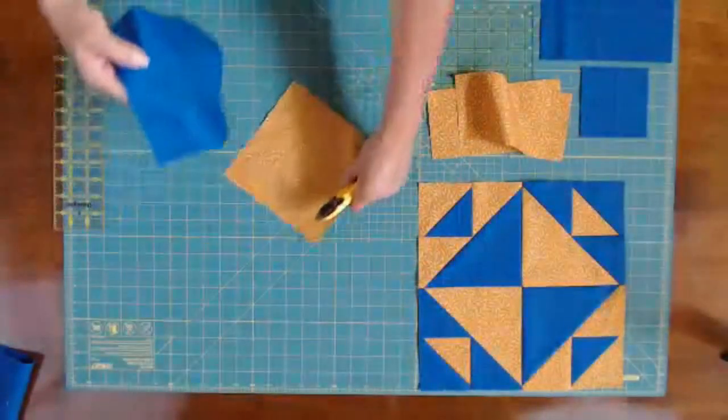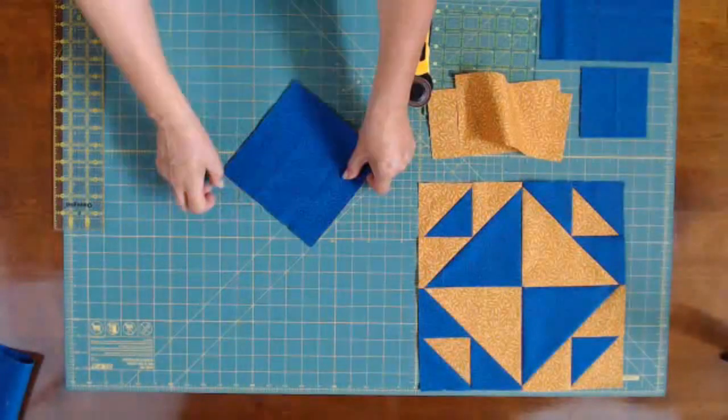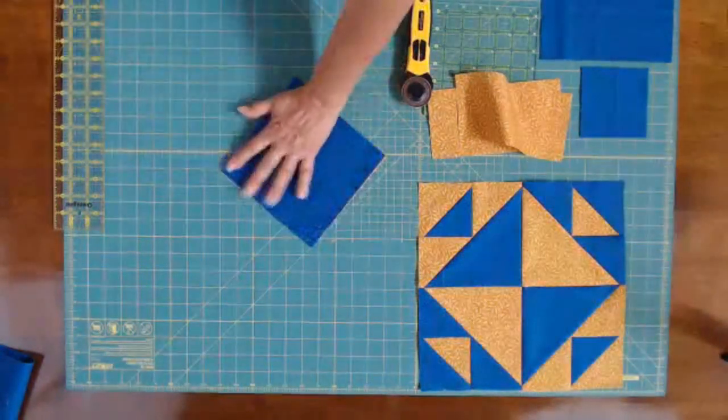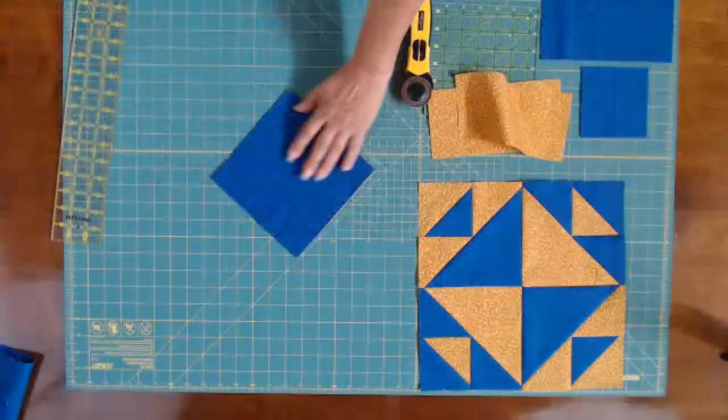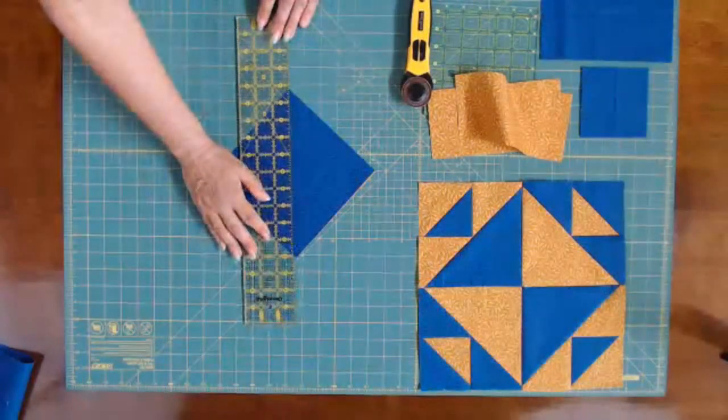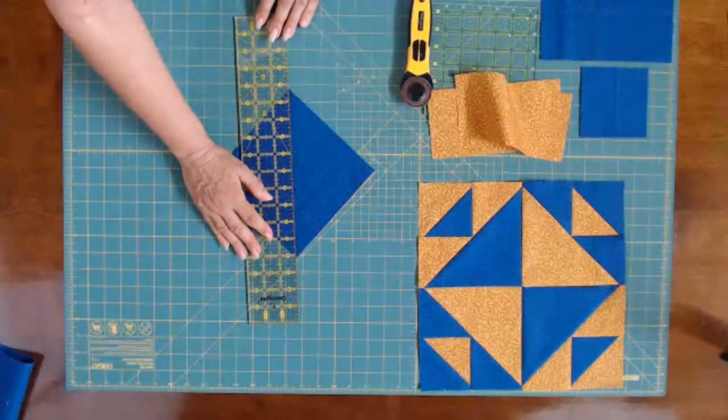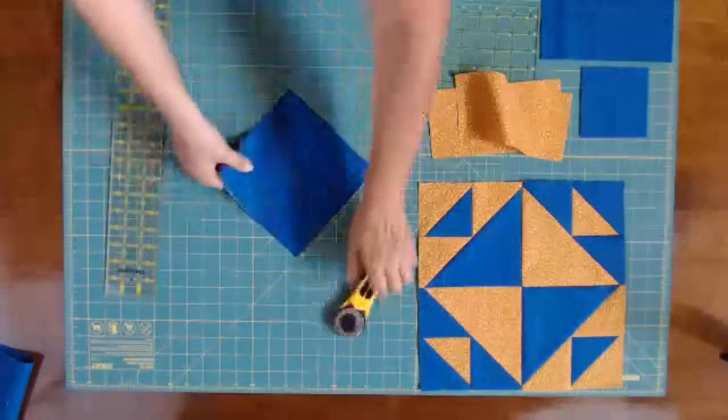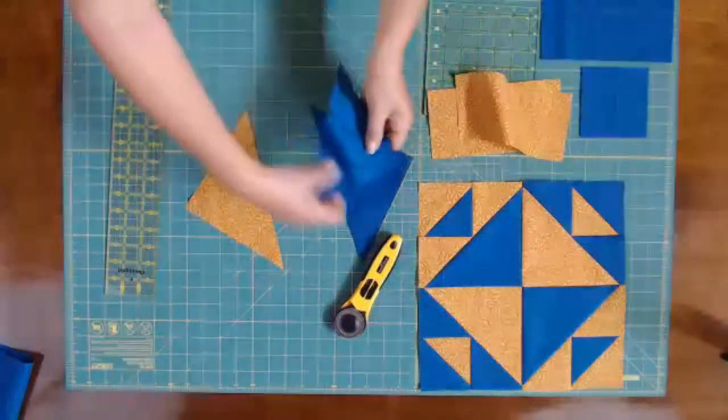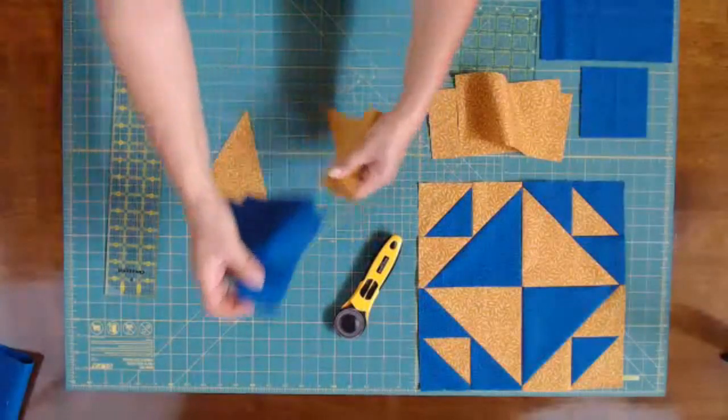And these will just be cut in half from point to point on the diagonal. So I will just cut these in half. All right, so those are ready to go. And I'll put those aside.